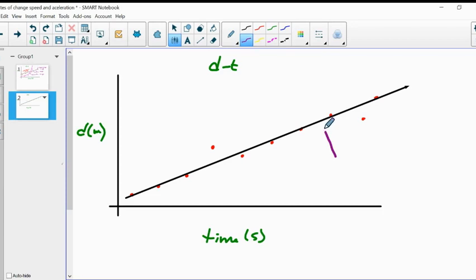If we have linear data, that tells us that our velocity is not changing. So this is our velocity or our speed, depending upon if it's a scalar or a vector. And it represents a change in the distance over a change in the time.